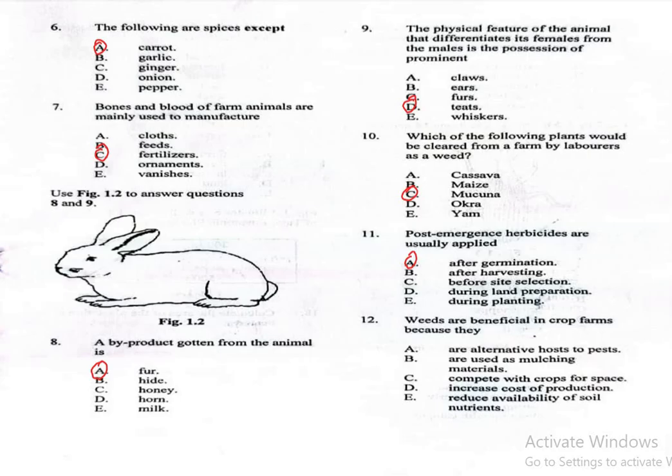Question 12. Weeds are beneficial in crop farms because they: A. Have alternative hosts to pests, B. Are used as mulching materials, C. Compete with crops for space, D. Increase cost of production, E. Reduce availability of soil nutrients. The correct answer is B, are used as mulching materials. Weeds can be cut and used as mulch, which helps retain soil moisture and control other weeds.